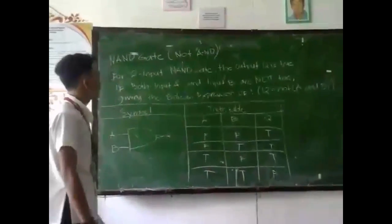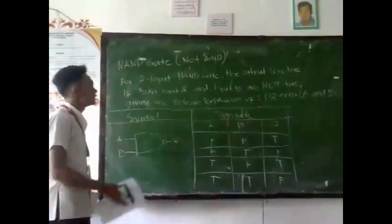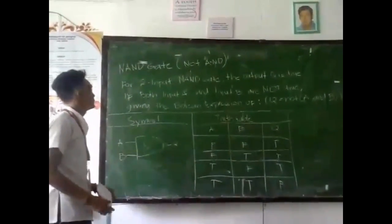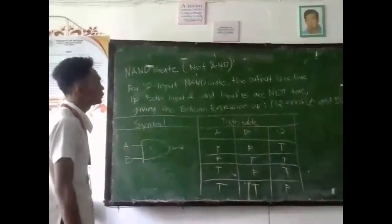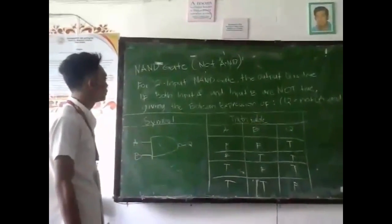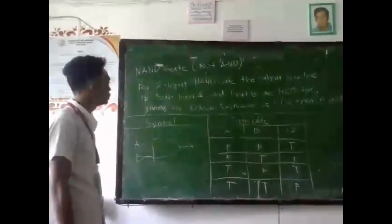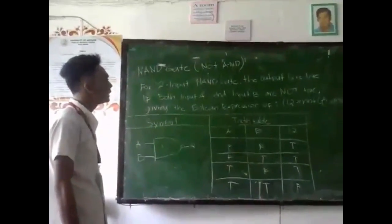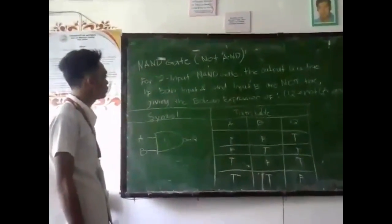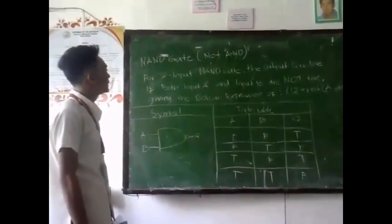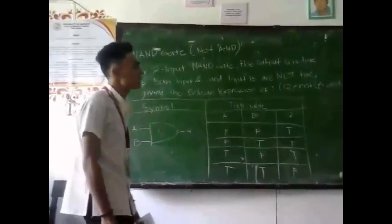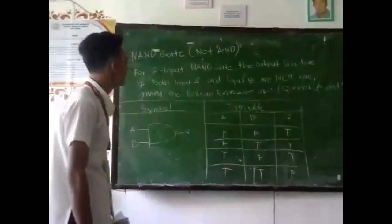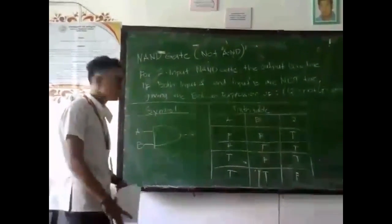The last logic expression is NAND Gate. For a two-input NAND Gate, the output is true when both input A and input B are not true. We will use the same expression for NAND Gate A and B.